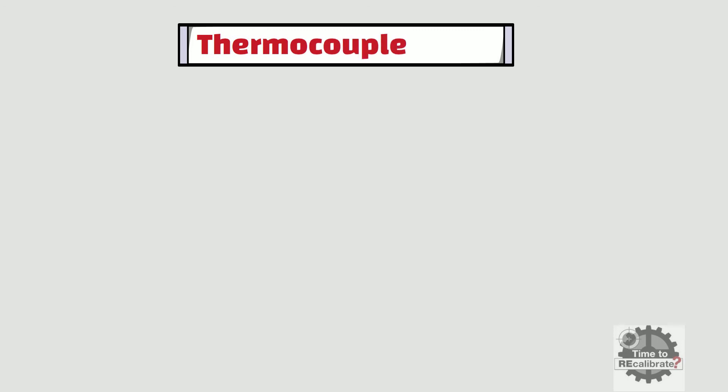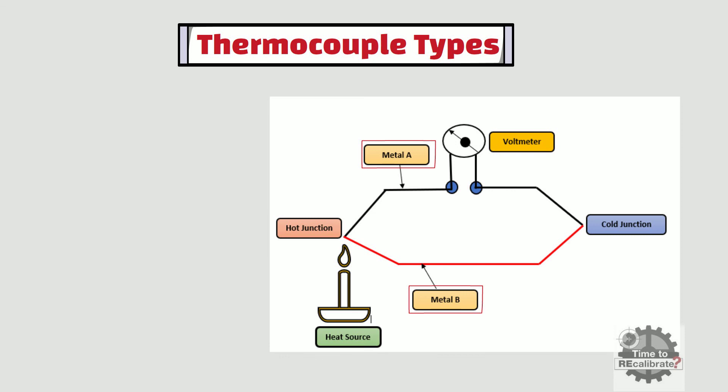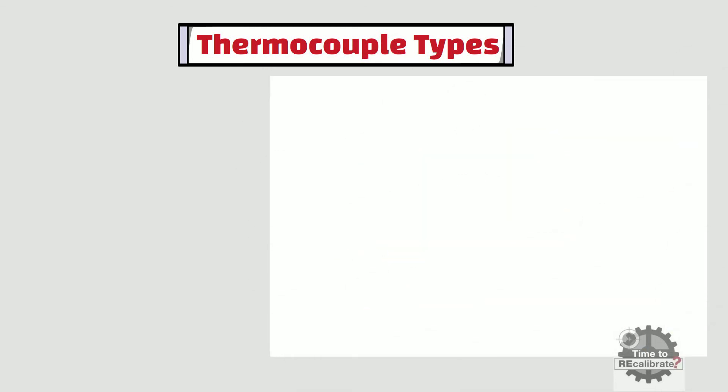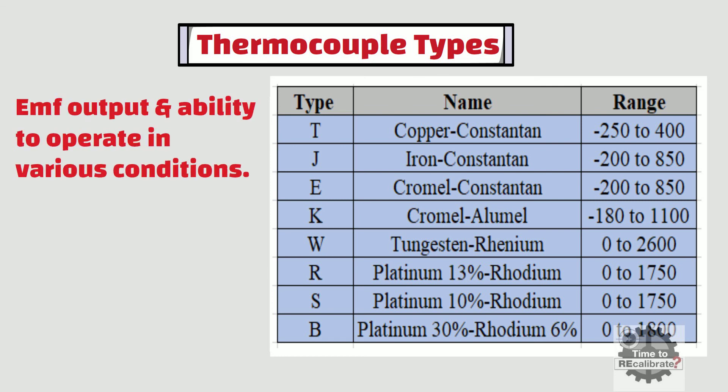Any two dissimilar metals can be made into thermocouples. However, certain metals have been selected over time that make ideal thermocouples for various applications. These metals have been chosen for their EMF output and their ability to operate under various conditions. There are several types of these standard thermocouples in use today.